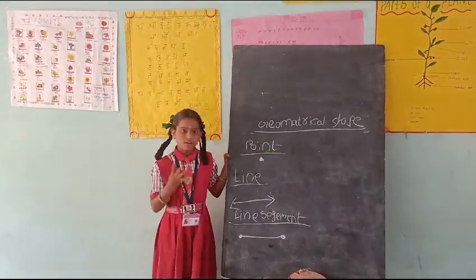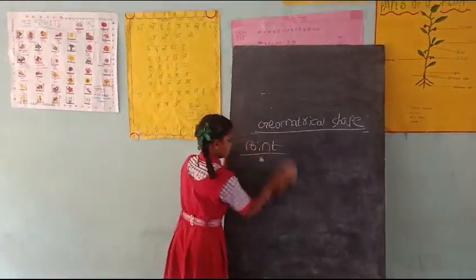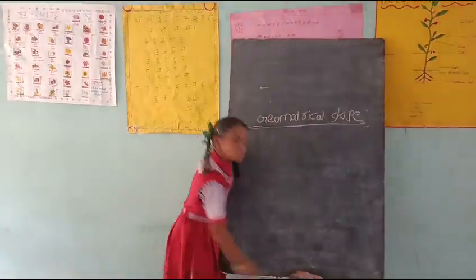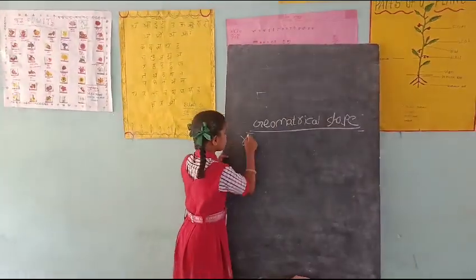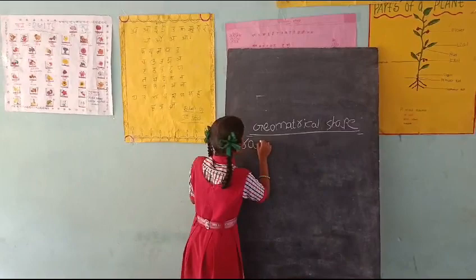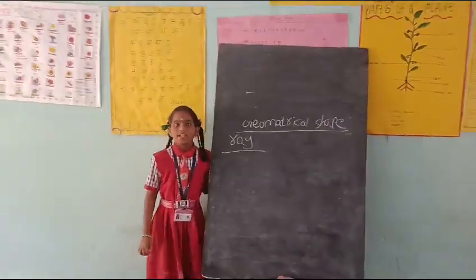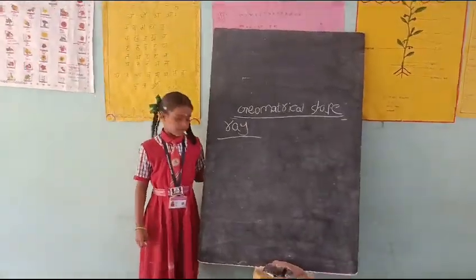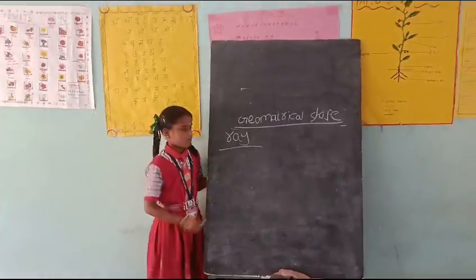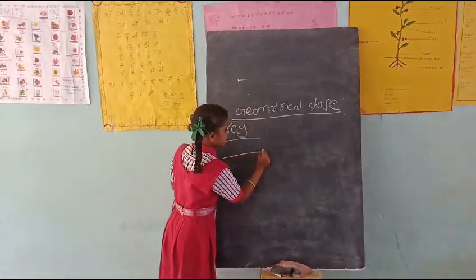Fourth one is Ray. Ray has one arrow mark. No, not like this.